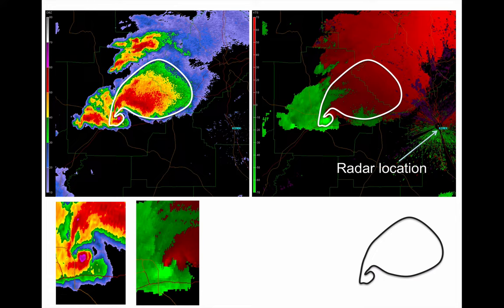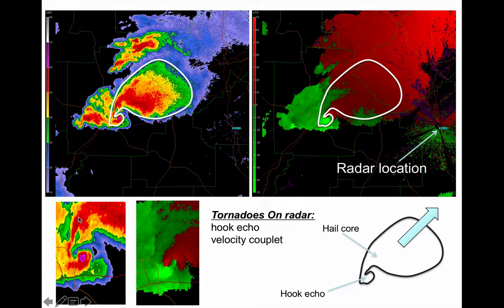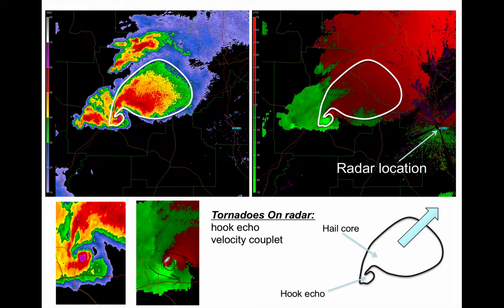The image on the right is the radar reflectivity image — intensity. The image on the left is the radar radial velocity image — wind speed and direction. Whenever we use radar to detect tornadoes, we look for hook echoes and velocity couplets. The storm is moving southwest to northeast. There's often high reflectivity where hail occurs. The velocity couplet: red outbound, green inbound — one part of the storm going one direction, another part going the other direction. The whole thing was violently spinning, and that is the location of the tornado.